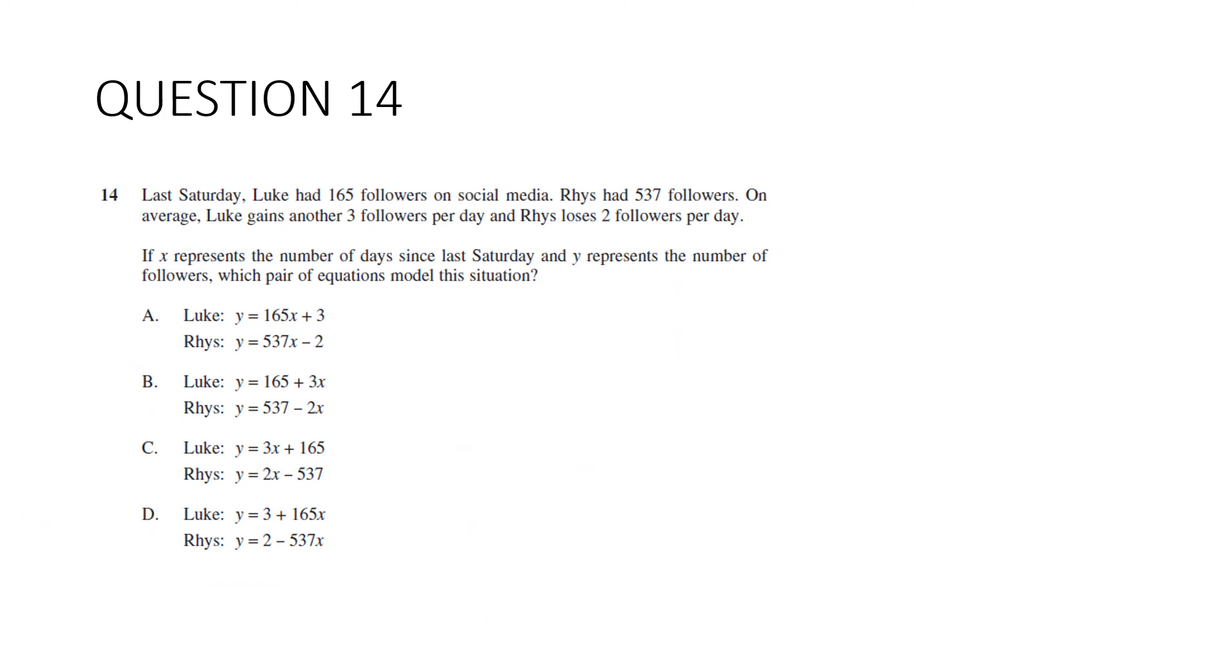Question 14. Last Saturday, Luke had 165 followers on social media and Rhys had 537 followers. On average, Luke gains another three followers per day and Rhys loses two followers per day. If X represents the number of days since last Saturday, Y represents the number of followers, which pair of equations models this situation? So this is a bit of a nasty question. It's really asking you if you understand the difference between gradient and Y-intercept. Because 165 and 537 are the vertical intercepts or the Y-intercepts. It's the number of followers that they have on day zero on Saturday. Three and negative two are the gradients of the line. It's the rate of increase or decrease. You can see that because of this word per day. So remember Y equals MX plus C. So you can see this one's wrong because they're saying that it's going up by 165 each day and it started with three. So A is out.